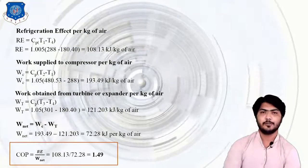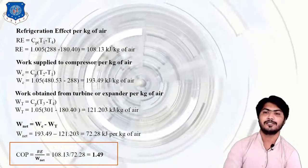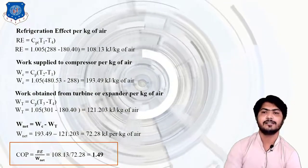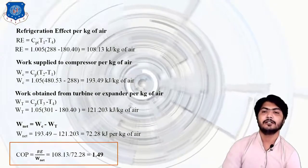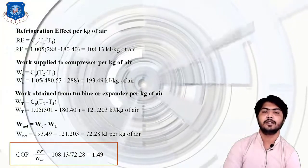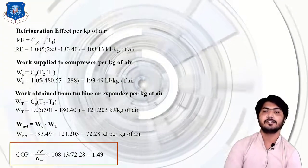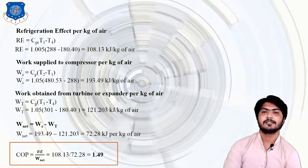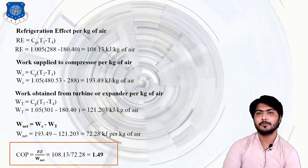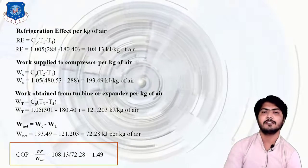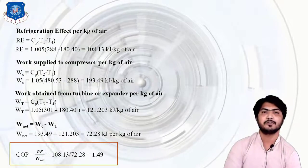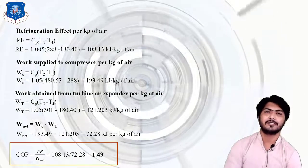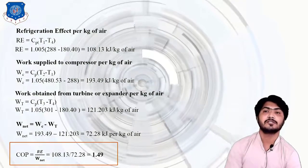COP is the ratio of refrigeration effect to the net work supplied — as we studied in the introduction lecture. Wnet = Wcompressor − Wturbine. So COP = 108.13 / 72.28 = 1.49. That is the COP of the given system. Note that if only COP is asked, we can also use the direct formula: COP = 1 / [(P2/P1)^((γ−1)/γ) − 1], using the pressure ratio and gamma directly.